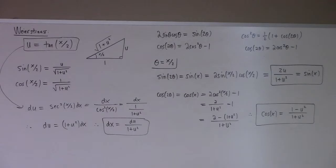If this is the substitution, that gives me this triangle. But if we have this triangle, then what can I do? I can say sine is opposite over hypotenuse, and cosine is adjacent over hypotenuse.